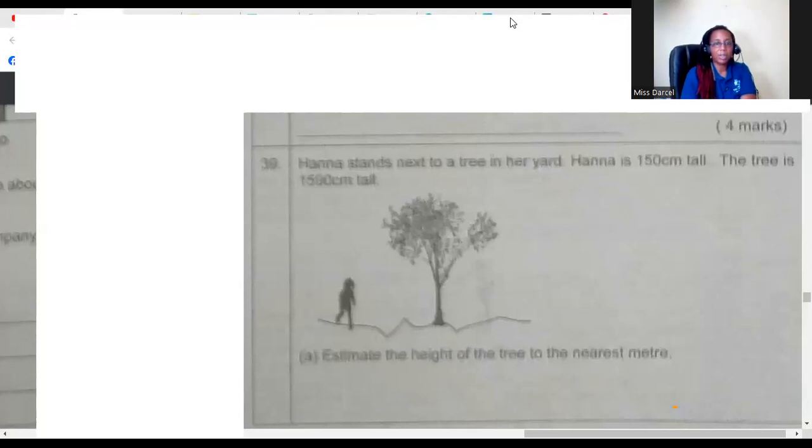Hannah stands next to a tree in her yard. Hannah is 150 centimeters tall. The tree is 1,590 centimeters tall. Estimate the height of the tree to the nearest meter. Now there are two ways you can do this. You can change everything to meters and work with that unit of measurement, or you work with centimeters and then in the end change it to meters. Since both measurements are centimeters, we will work with that and in the end we're going to change it to meters. Estimate means we're going to round it.